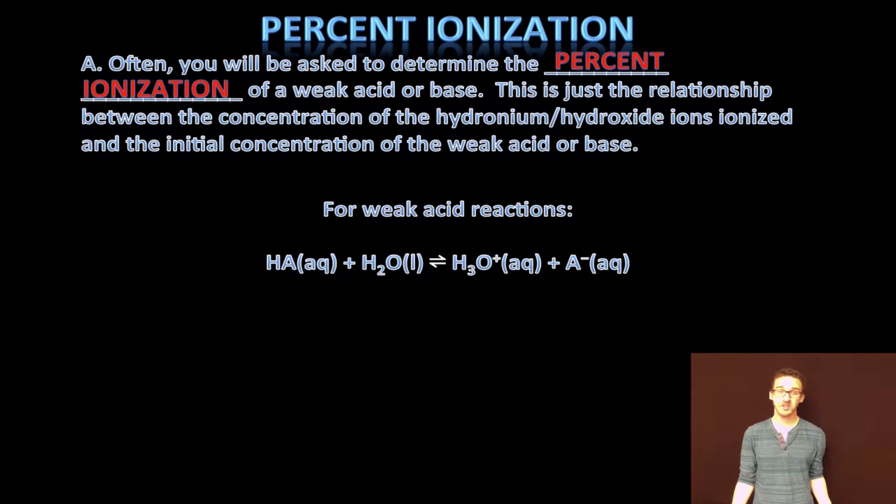So what the heck is percent ionization? Well, typically we're going to do it for weak acids and bases, and this just tells us the relationship between the concentration of the hydronium or hydroxide ions that have been ionized and the initial concentration for the weak acid or base. It's another way for us to tell the relative strength of a weak acid or base. The greater the percent ionization, the stronger the acid. The smaller the percent ionization, the weaker the acid.